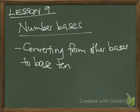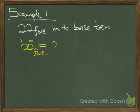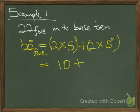Lesson 9, number bases — converting other bases to base 10. Example: 25 in base 5 converted to base 10. We expand this. Position 0 is units, position 1 is next. It equals 2 times 5 to the power 1 plus 2 times 5 to the power 0. That means 2 times 5 is 10, plus 2 times 1 is 2, so the answer is 12 in base 10.